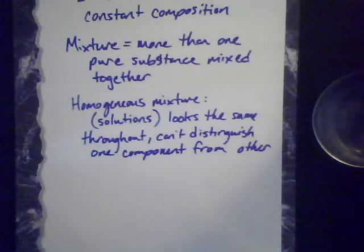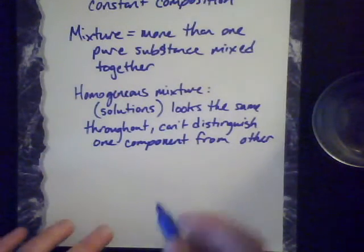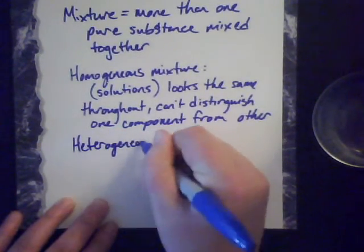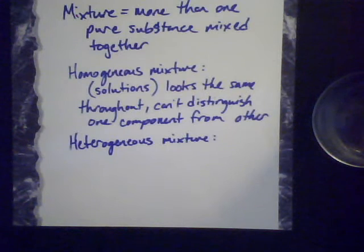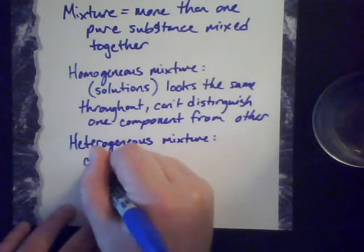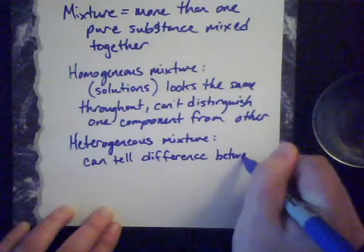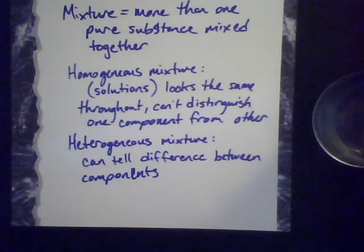So homogeneous mixtures look the same throughout — you can't tell the difference between one component or the other, which is why we call them homogeneous. The opposite of that, or another option, is to have a heterogeneous mixture. The prefix 'hetero' means 'different,' so a heterogeneous mixture means you can tell the difference physically between the components in the mixture. Both heterogeneous and homogeneous are mixtures of more than one pure substance — that's the distinction to be made.